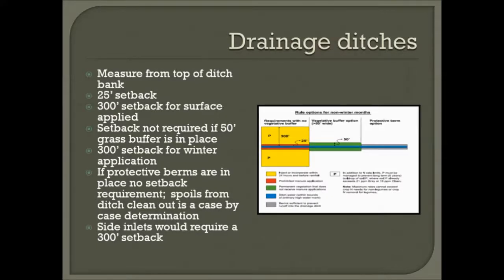Drainage ditches are measured from the top of the drainage ditch. There's a 25-foot setback if you're incorporating the manure, or a 300-foot setback if you're surface applying. The setback is not required if there's a 50-foot grass buffer in place. A 300-foot setback is required for winter application. If the drainage ditch has a protective berm, there is no separate setback requirement.